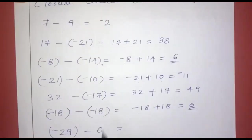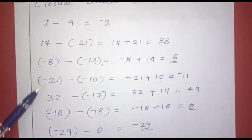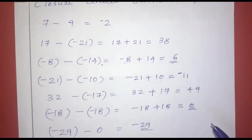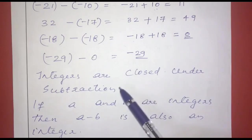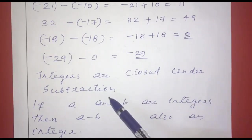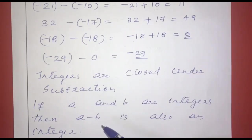Next one: negative 29 minus 0 equals negative 29. If we subtract, the answer is still an integer. Subtractions are closed. Integers are closed under subtraction. If a and b are integers, then a minus b is also an integer.